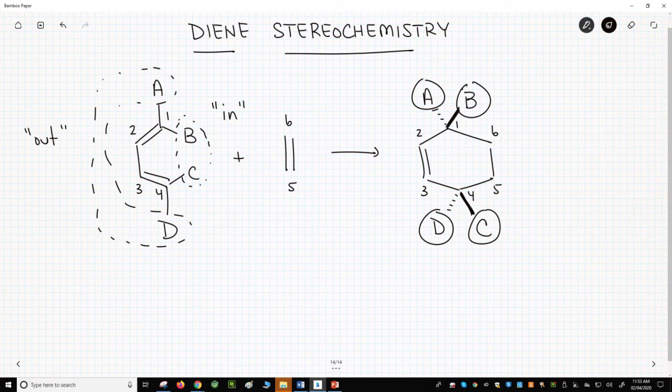Note that carbons 2 and 3 end up as part of the alkene in cyclohexene, so there is no stereochemistry to discuss for any R groups on those carbons.